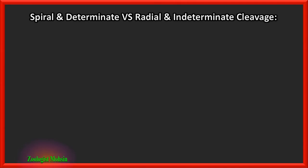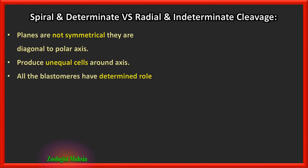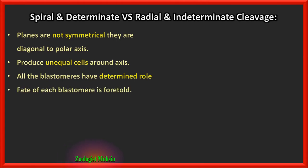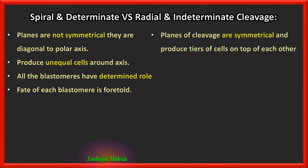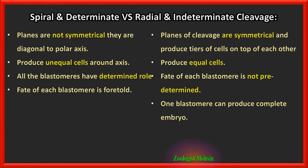In spiral and determinate cleavage, planes are not symmetrical — they are diagonal to the polar axis and produce unequal cells. All blastomeres have a determined role; if one blastomere is separated it will grow into a specific part of the body only. In contrast, in indeterminate cleavage, planes are symmetrical and produce tiers of equal cells. The fate of each blastomere is not predetermined — any blastomere at any stage can be converted into a complete individual, so one blastomere can produce a complete embryo.